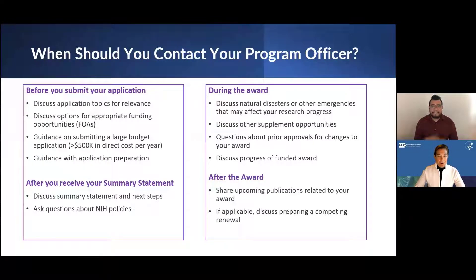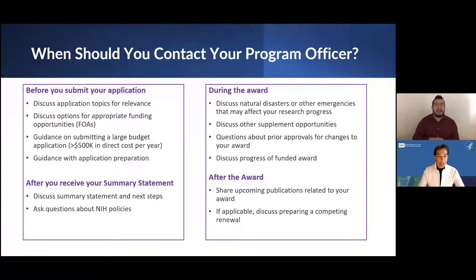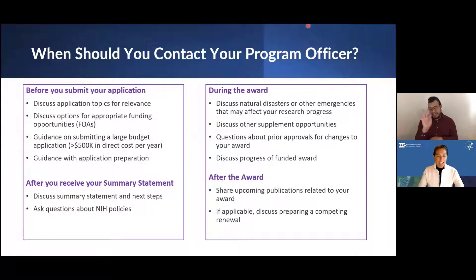When should you contact your program officer? Before you submit your application, you can discuss whether the application topics are relevant for that particular IC. You can also discuss the appropriate funding opportunity announcement or what type of grant mechanism to apply for — for example, an R21 or an R01. Program officers can also help provide guidance on submitting a large budget, such as a grant over $500K in direct costs. This is actually required before submitting such a grant, depending on the funding opportunity announcement you choose.